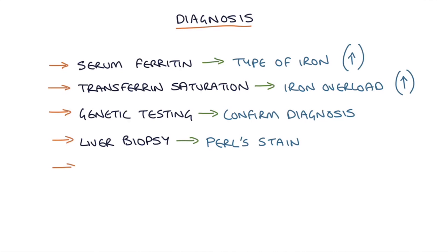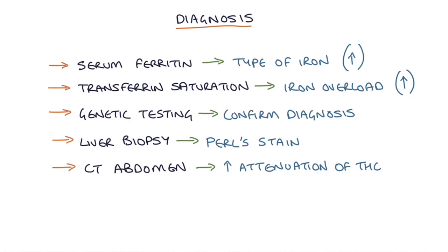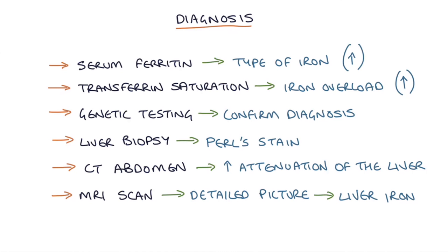A CT scan of the abdomen can show non-specific increased attenuation of the liver, suggesting iron overload in liver tissue. An MRI scan gives a more detailed picture of iron deposits in the liver, and can also be used to assess iron deposits in the heart, which is one of the complications.